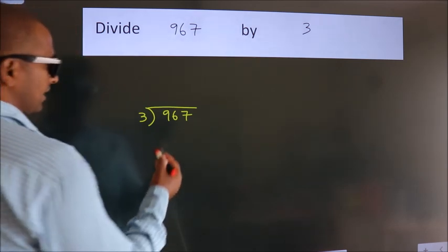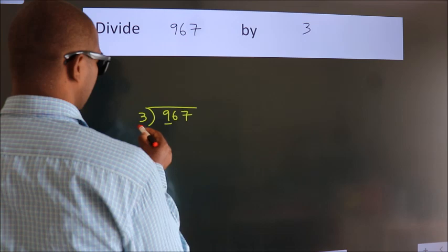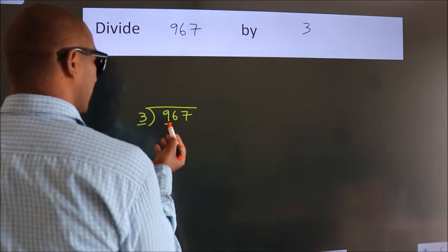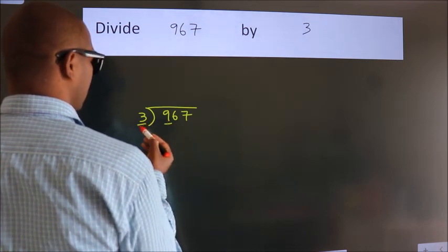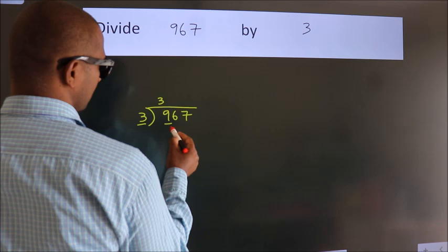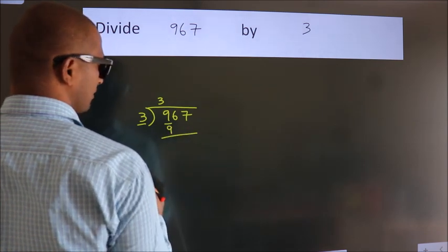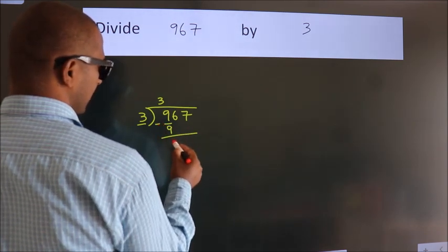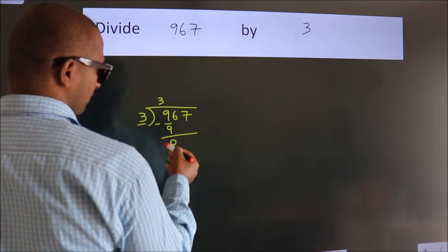Next. Here we have 9, here 3. When do we get 9? In 3 table. 3 3s, 9. Now, we should subtract. We get 0.